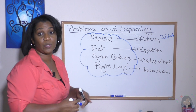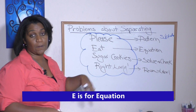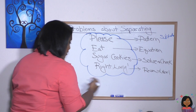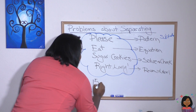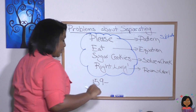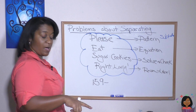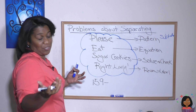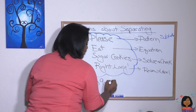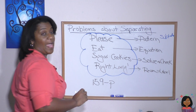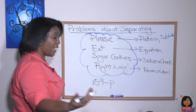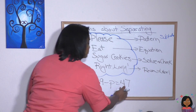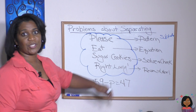E stands for equation. What's the equation? Well, what was our beginning amount? We had 159 pieces of popcorn, and we ate — we don't know how much we ate, there's a big question mark there. So we're going to call that P for popcorn. And then we have what remains, which is 47 pieces of popcorn. That is our equation: 159 minus P equals 47.